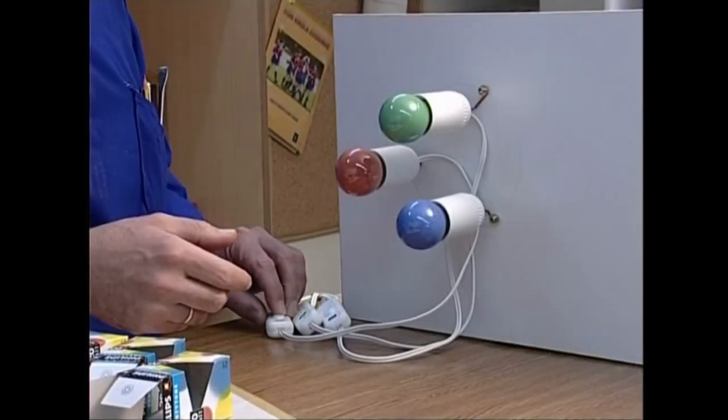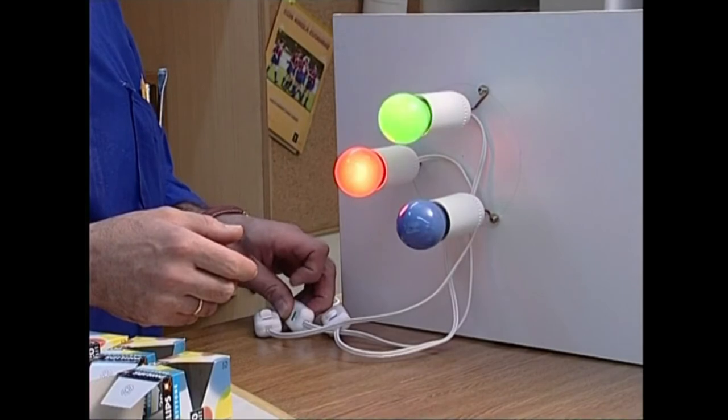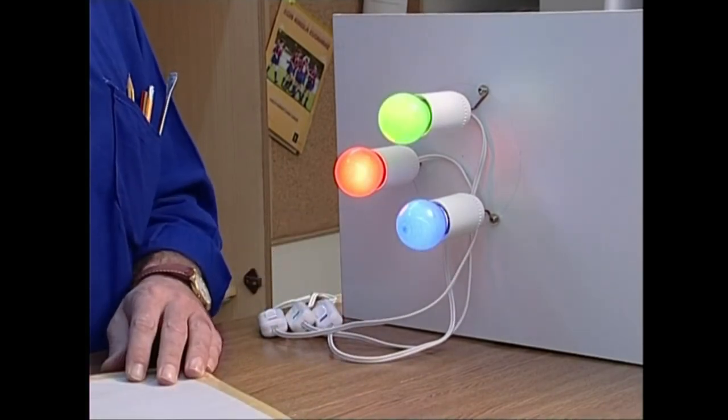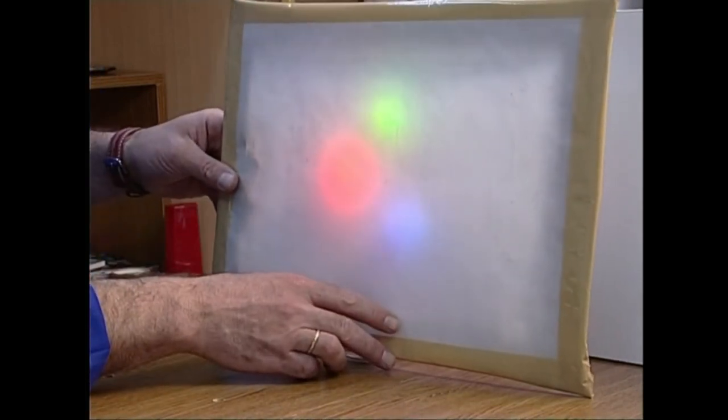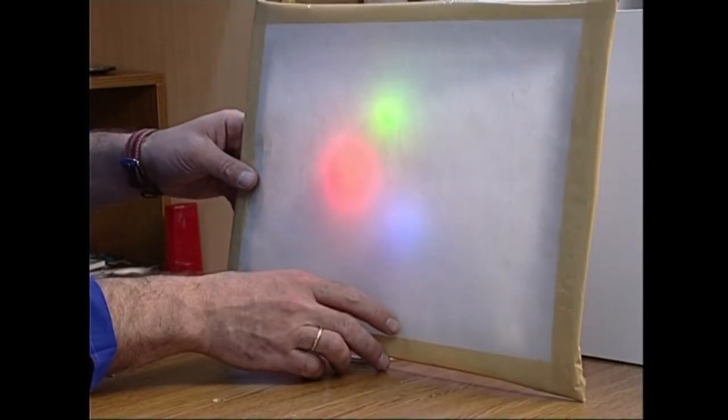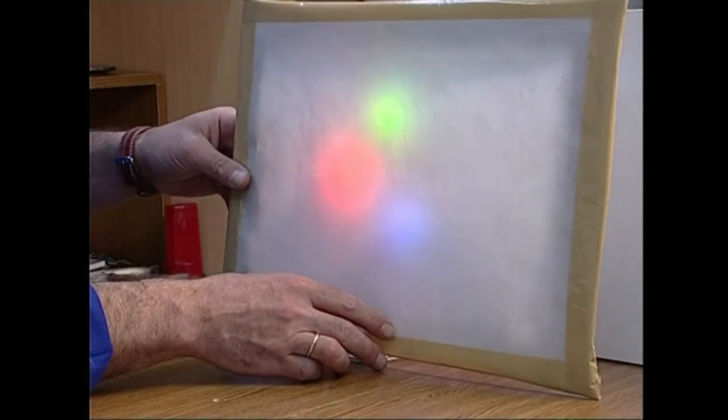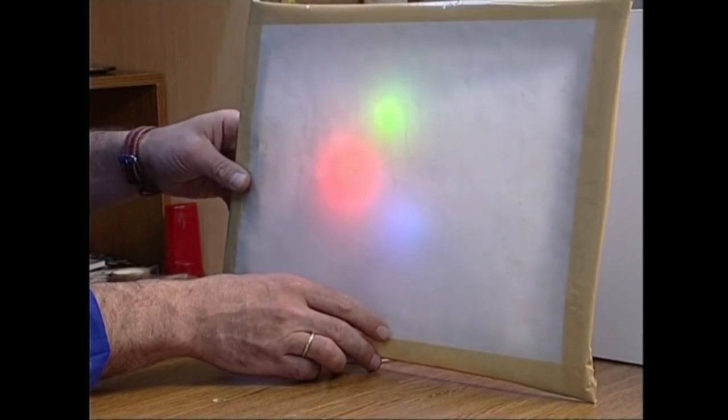Iru lanparak bata bestearen ondoan, euren argi izpia gainezartzeko moduan kokatuko ditugu. Ondoren, piztu egingo ditugu eta euren aurrean gainazal zehar argia jarriko. Orain, argiek sortzen dituzten efektuak ikusiko ditugu.